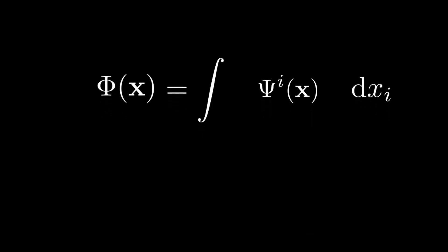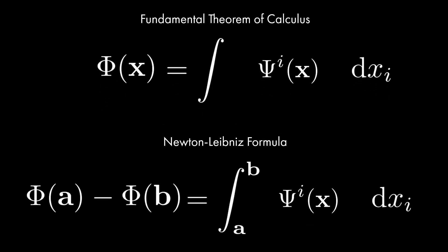Now, by the fundamental theorem of calculus, we observe that the integral network, phi, is an antiderivative of the grad network, psi. Thus, we can calculate a definite integral of any signal represented by psi, by evaluating phi at the two bounds of integration.